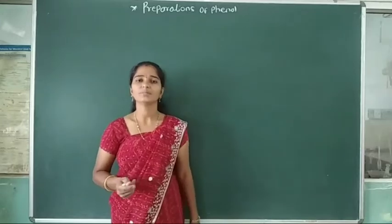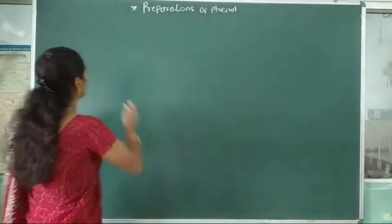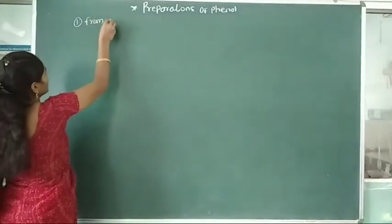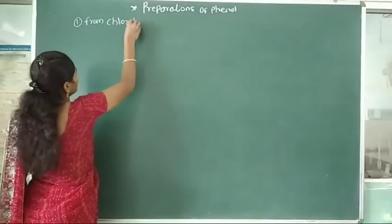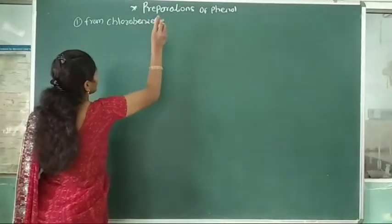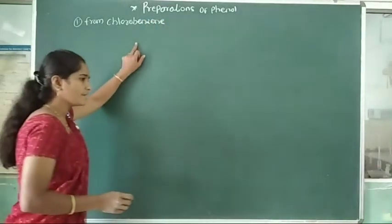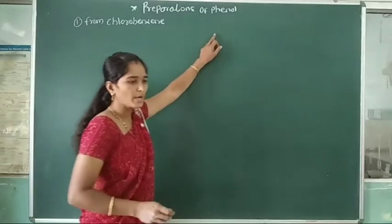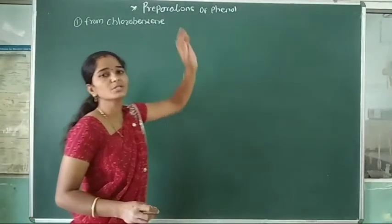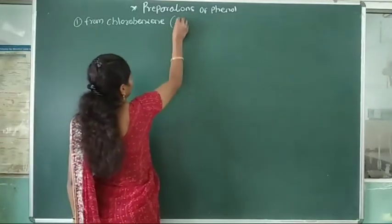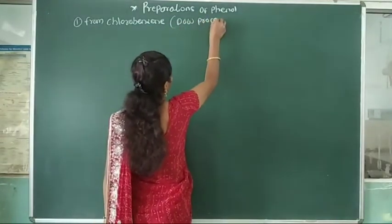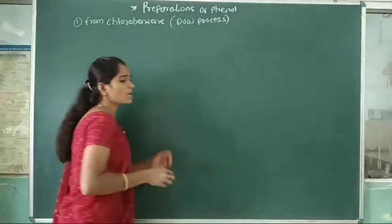The first method: phenol is prepared from chlorobenzene. By using chlorobenzene, phenol is prepared. This process is called the Dow process.